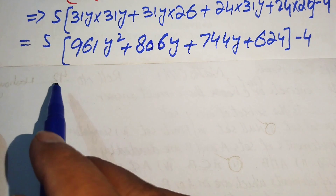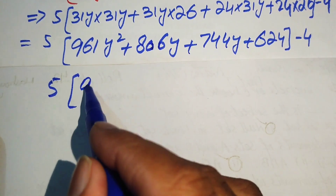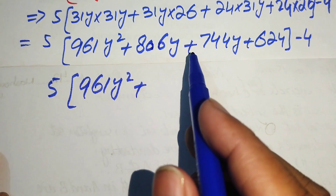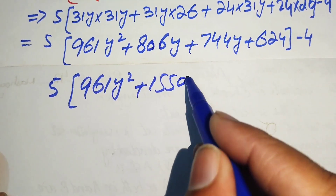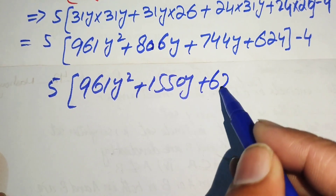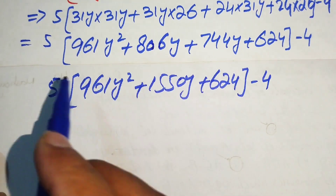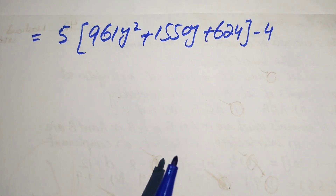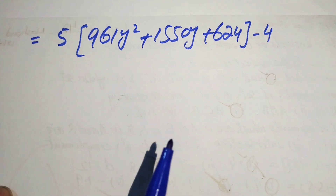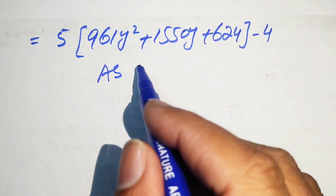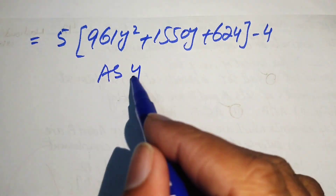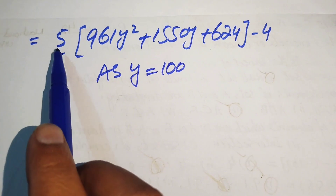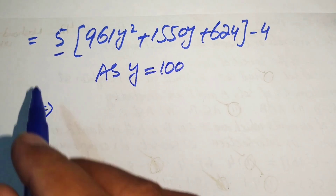Adding the like terms, we get 961y squared plus 1550y plus 624 minus 4. We then multiply the outer factor of 5 through each term, giving 4805y squared plus 7750y plus 3120 minus 4. Now we back-substitute y equals 100.